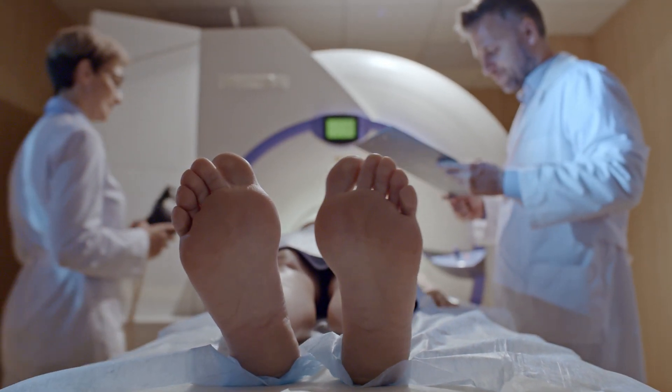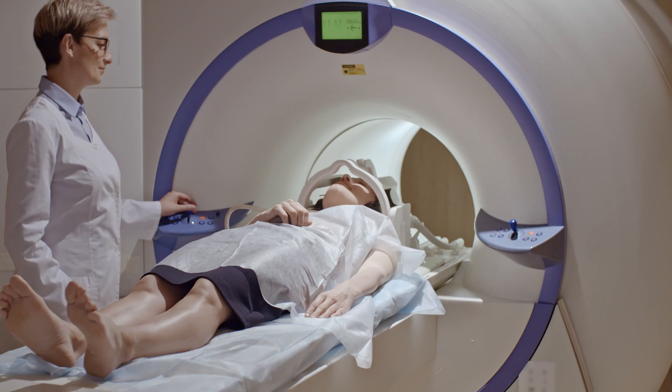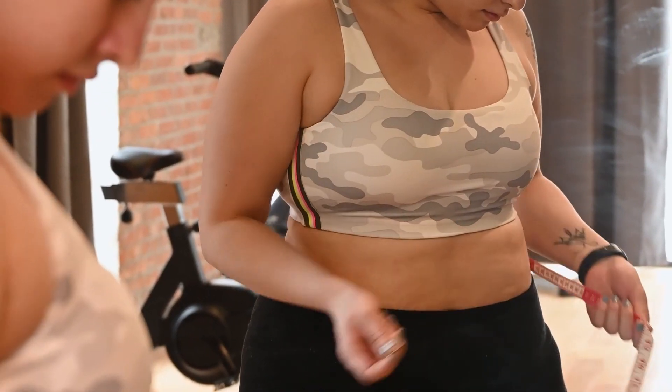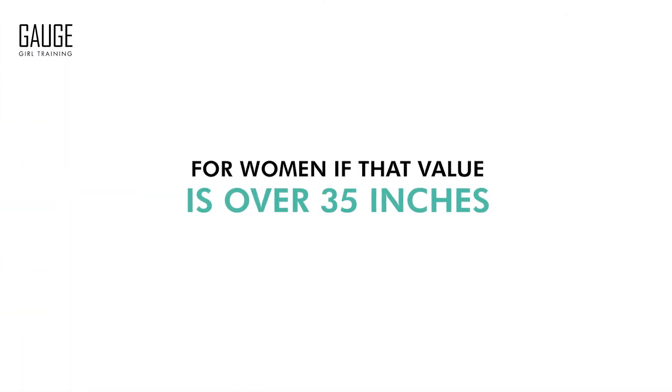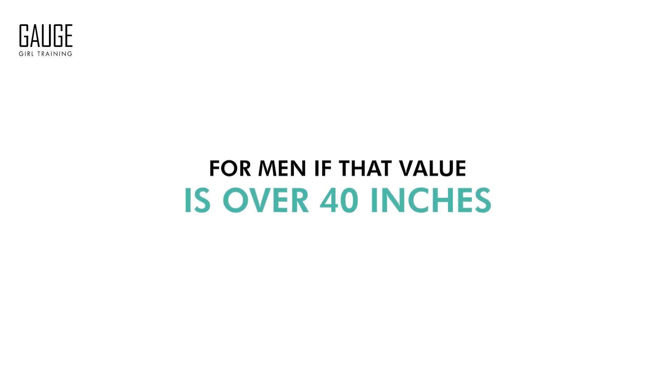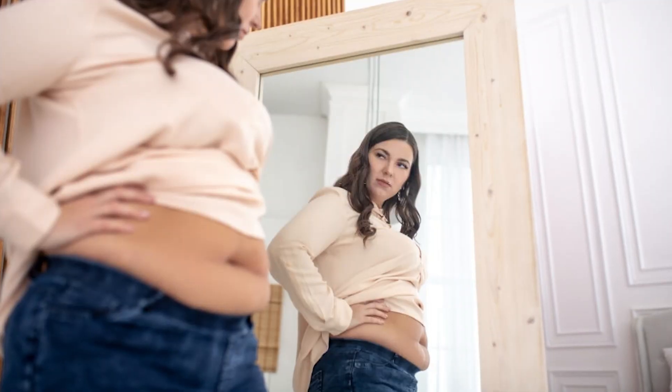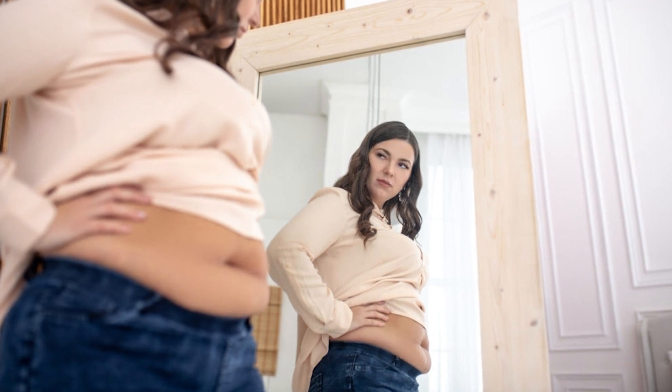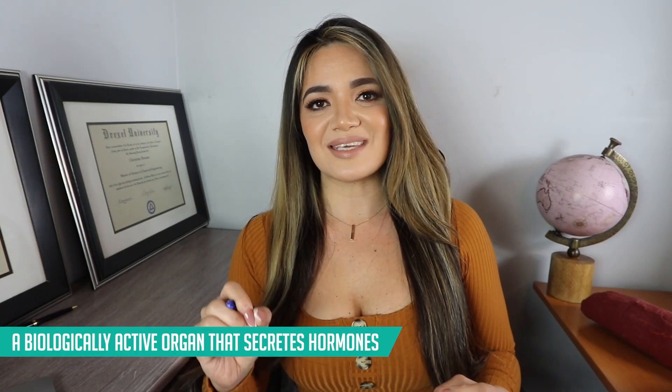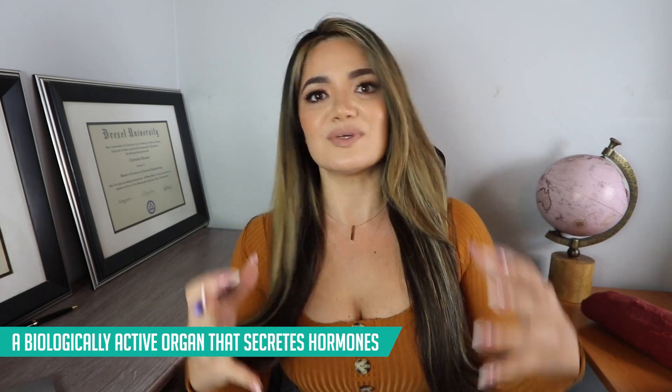Visceral fat can be measured by MRI or by a CT scan, but that's very costly and very time-consuming. The best way to get a gauge of whether or not you are at risk for having visceral fat is to do a tape measure around the smallest part of your waist. For women, if that value is over 35 inches, and for men, if that value is over 40 inches, it does put you at risk for having visceral fat, which is a biologically active organ that secretes hormones.